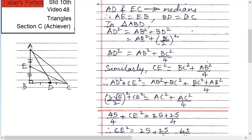Similarly, CE square equals to BC square plus AB square upon 4. Therefore, AD square plus CE square equals to AB square plus BC square plus BC square plus AB square upon 4. Right.